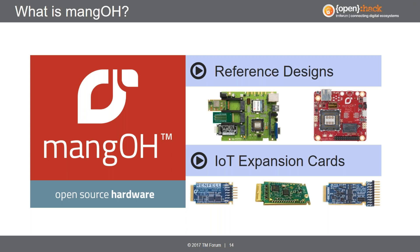Good morning everyone. From Sierra Wireless' side, we'll be presenting and giving you an opportunity to play with the Mango Red platform. I'm going to talk about what the Mango platform is, go through a few use cases that might give you ideas for the hackathon, and then talk about what we're exposing to you during the hackathon itself. Mango is a highly flexible and expandable open-source hardware platform which has been purpose-built for cellular connectivity. It's a business-to-business open hardware platform that bridges the gap between the makers and industrial products.